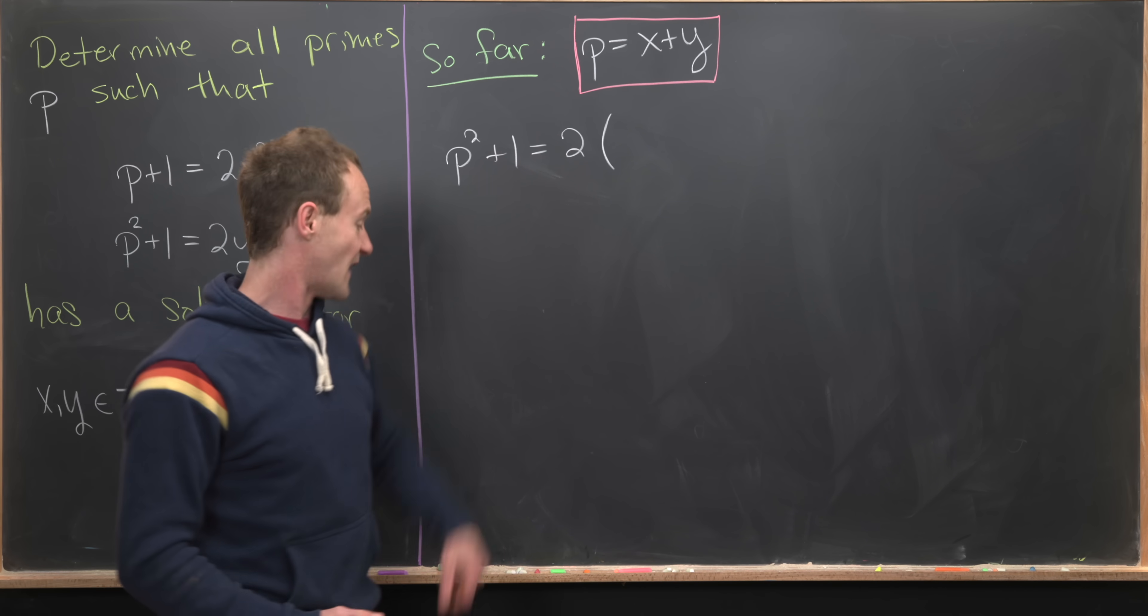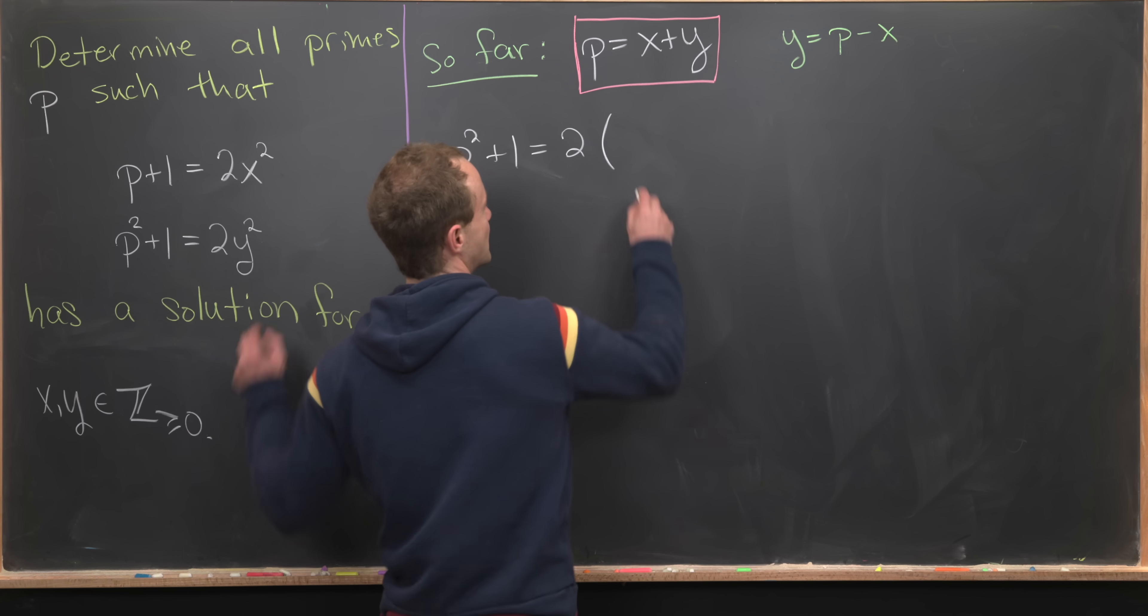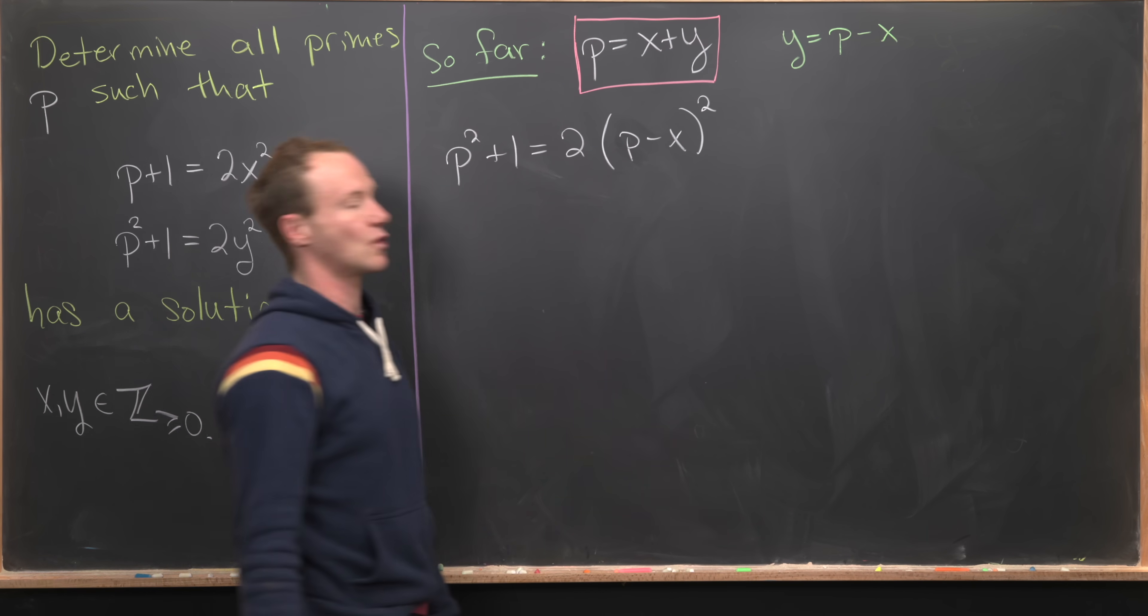We'll take this second equation and rewrite it as p²+1 equals 2y². But we'll use our fact to rewrite y. Notice y here equals p−x, so we can replace this y with p−x and then square it.